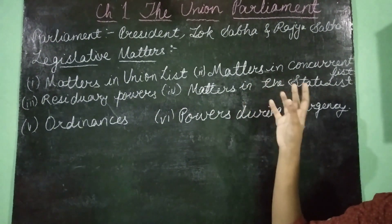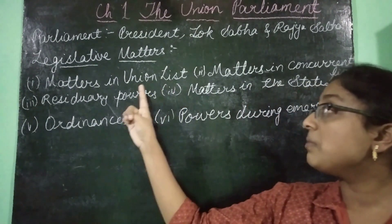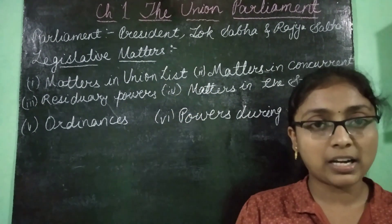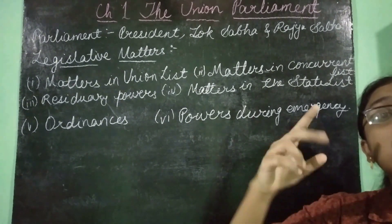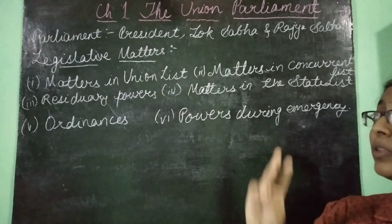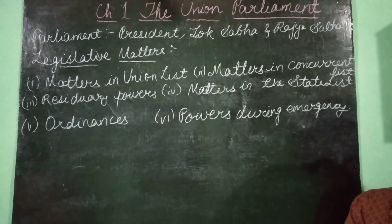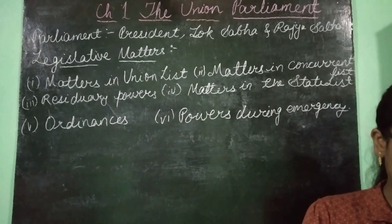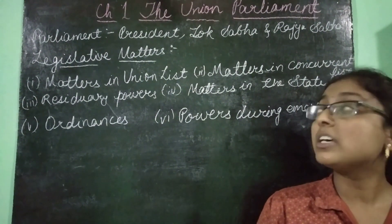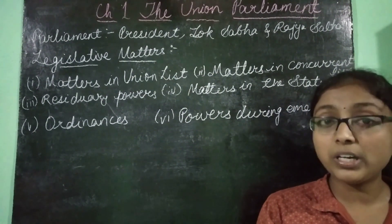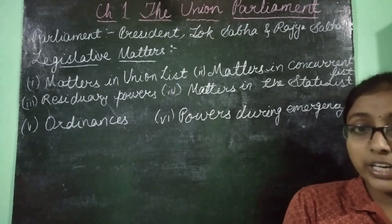There are three types of lists: the Union List, the State List, and the Concurrent List. The Union List is handled by the central government, the State List by the state government, and in the Concurrent List — which contains 47 subjects — parliament can also make laws. If there is a conflict between the union government and the state government on concurrent list matters, the union law prevails.